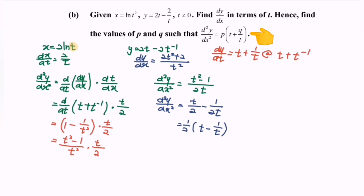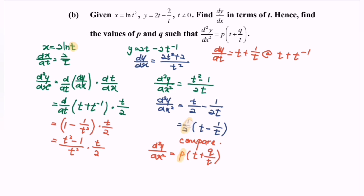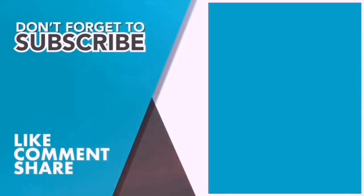Comparing with the given form of the second derivative, we conclude that p equals 1 over 2 and q equals negative 1. If you are new here, kindly consider subscribing to this channel and share this video with your friends. Thank you so much for watching. Bye!